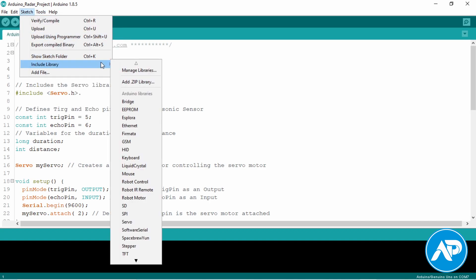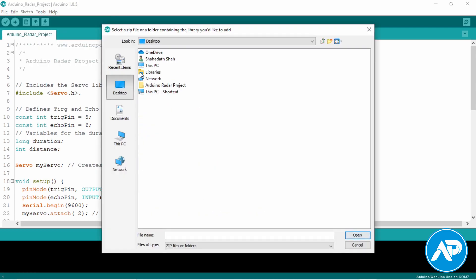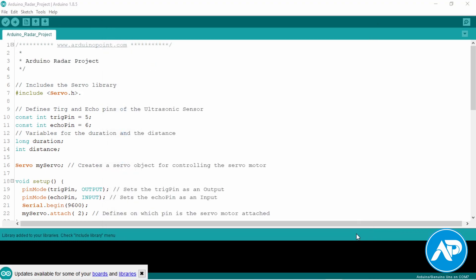Then go to Sketch, drop down to Include Library, and click Add ZIP Library. Select the downloaded servo library zip file. The library is included successfully.